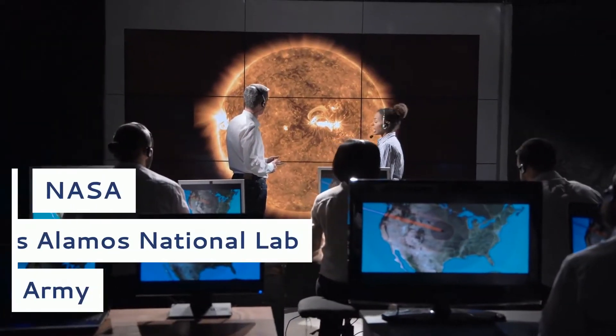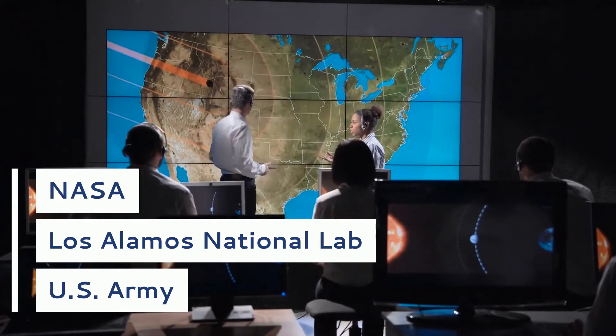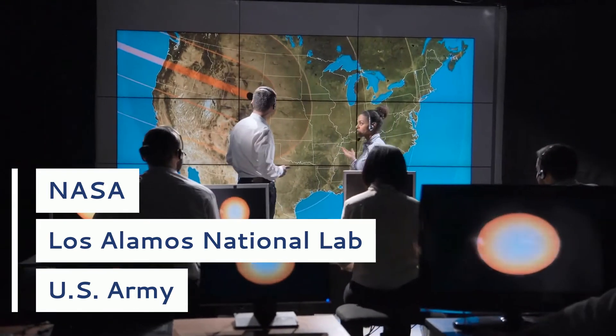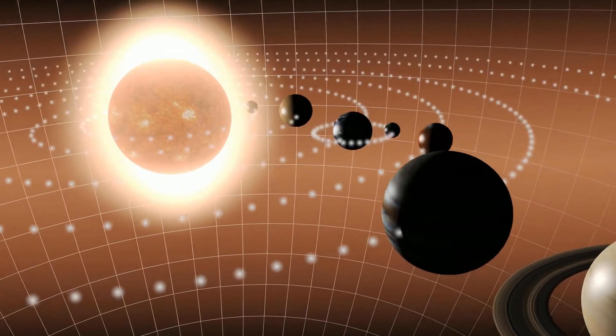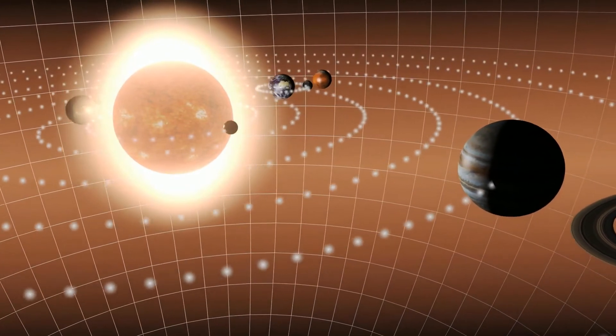Scientists from NASA, Los Alamos National Lab and the US Army put together a new model published in Physics Today that breaks down the average distance among planets. And it turns out that they're all on average closest to Mercury.